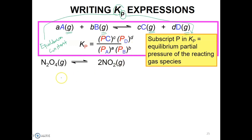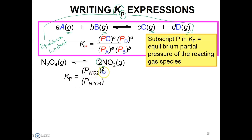For example, N2O4 gas decomposes to form 2NO2 gas. The Kp expression is the partial pressure of NO2 raised to the power of 2 (since the mole coefficient for NO2 is 2), over the partial pressure of N2O4 gas.